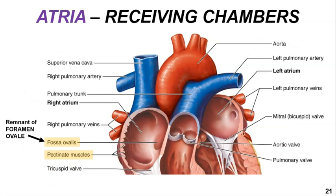In the interior of the right atrium we see small folds of muscle tissue referred to as the pectinate muscles. The pectinate muscles are thought to help increase the volume in the right atrium as it fills. Another structure seen in the right atrium is the fossa ovalis, which is a small oval-shaped indentation found in the interatrial septum.